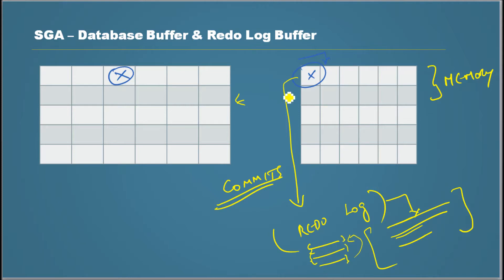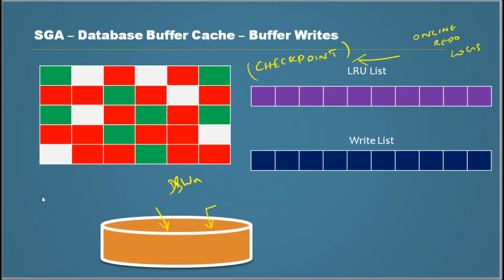The important thing is, from here when it goes to the next file a checkpoint happens. A checkpoint doesn't always have to happen here, but when it switches a checkpoint happens, so in that case all the blocks that need to be written get written.